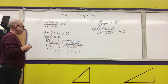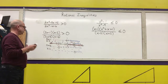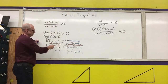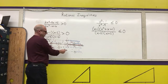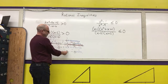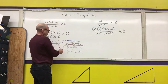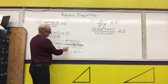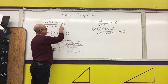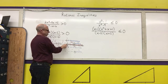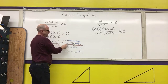Now I need to check the zeros. When the denominator is zero, it's undefined, so I won't shade that point. Here the denominator is negative but the numerator is zero — is zero greater than zero? No. So I won't shade it in.